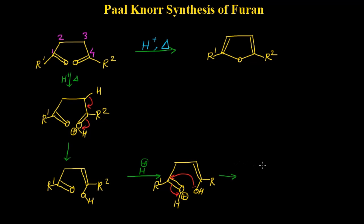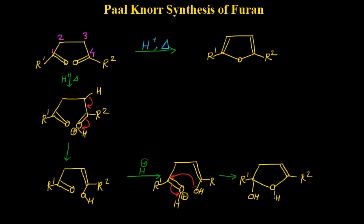We get the cyclization — a cyclic intermediate — with R1, R2, and O. We have the bond of this oxygen with this hydrogen carrying the positive charge.